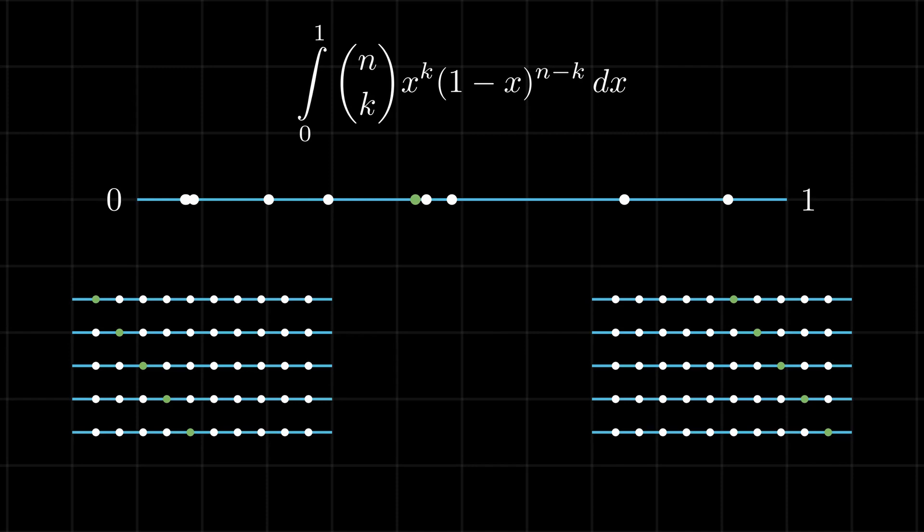There are n plus 1 possible orderings, and the green point has k points to its left on exactly one of them. Therefore, the required probability is simply 1 by n plus 1.